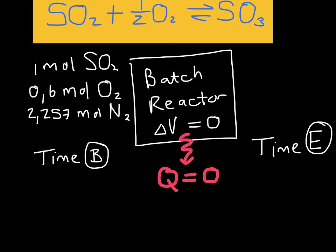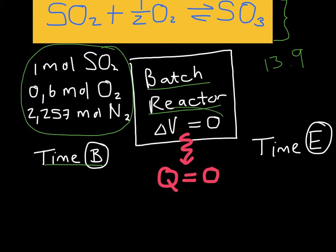Consider the same reaction as that given in example 13.9 in Smith, Van Ness and Abbott. Using the same molar composition at time zero, instead of considering a steady flow reactor, we want the reaction to take place in a batch reactor where the volume of the vessel stays constant, still adiabatic.